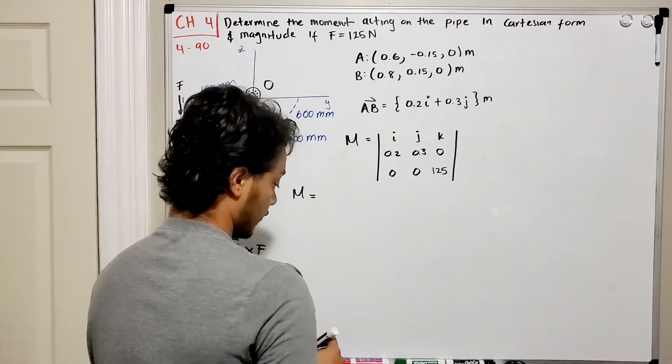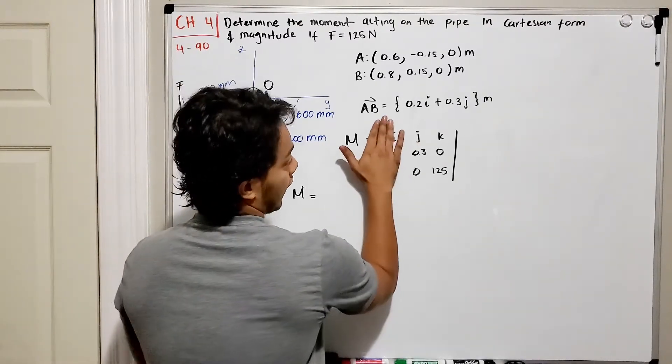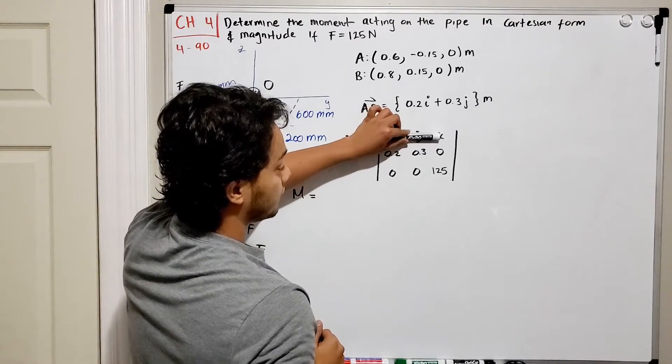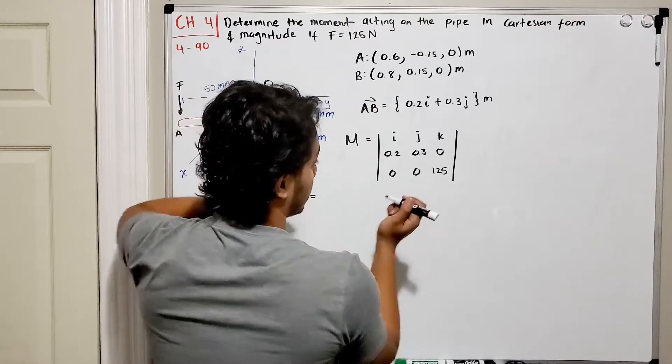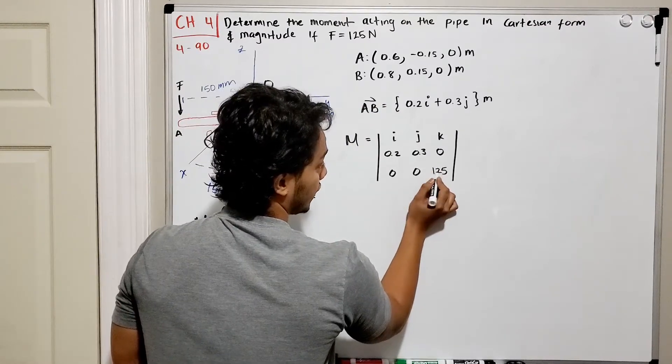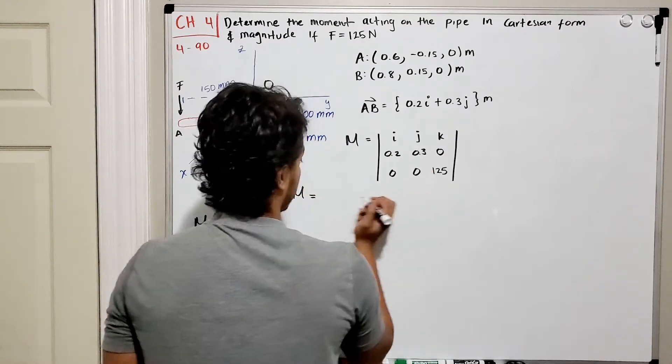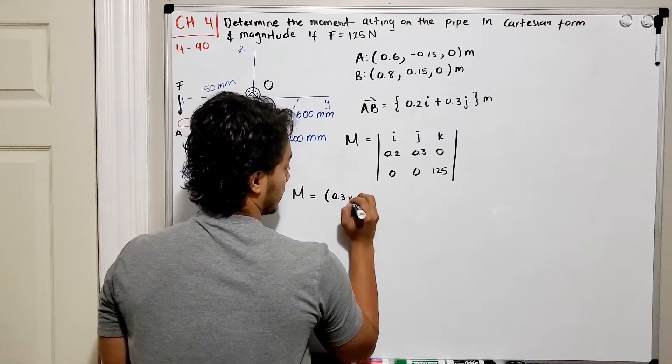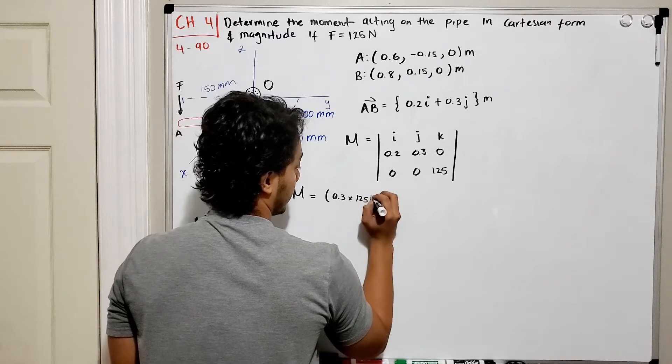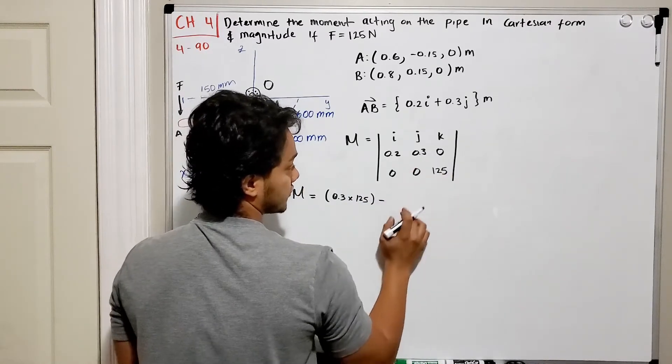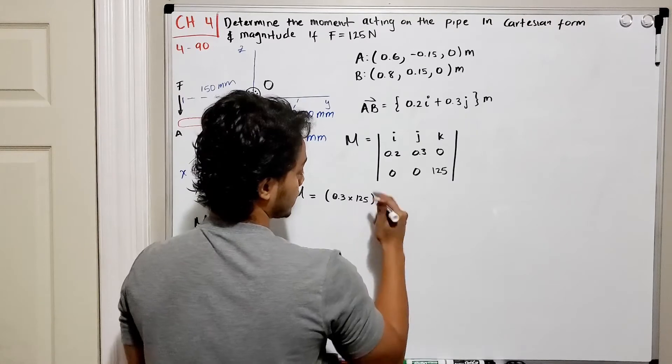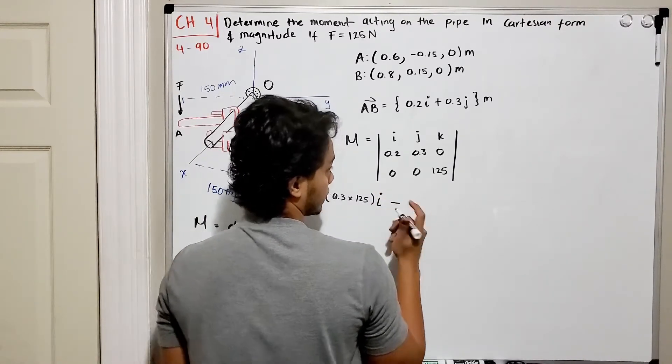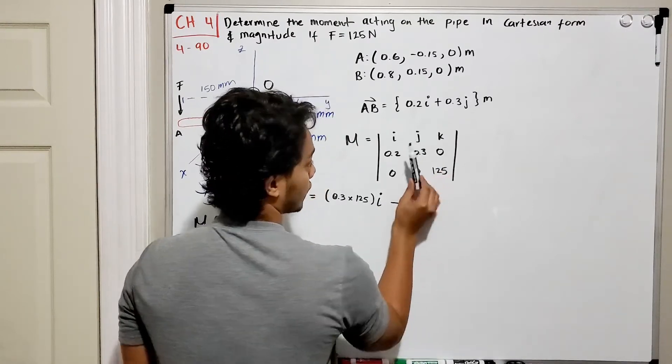Now if we do this we will find that my moment it's going to be equal to, so for the first case we hide this column, we hide our row, and we're going to multiply 0.3 by 125, so we do 0.3 multiplied by 125 minus 0 times 0 that gives me 0. So this will be my total in the i-direction. Then I have minus and then I will hide this row.